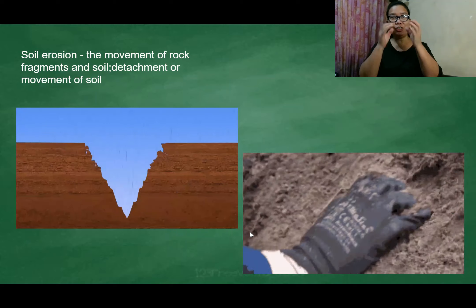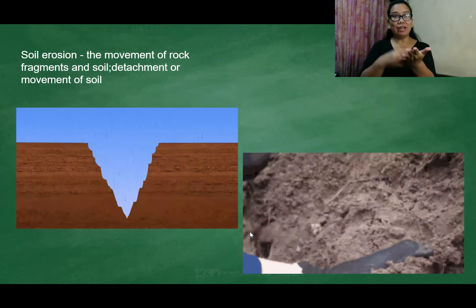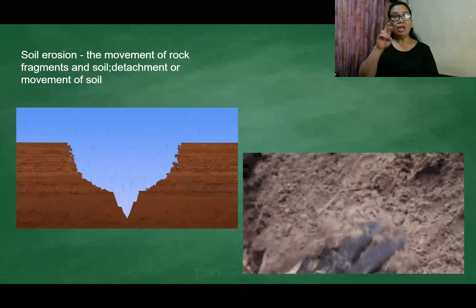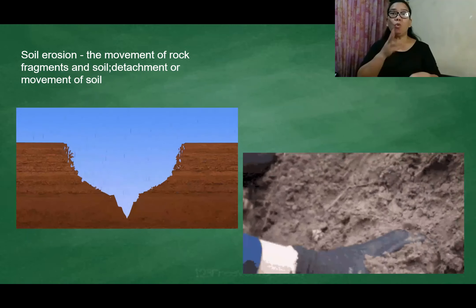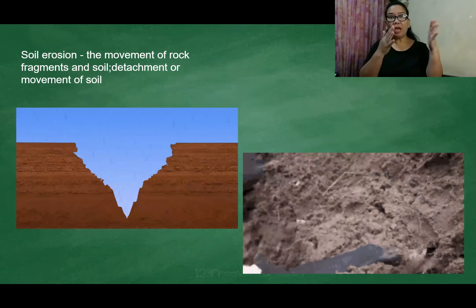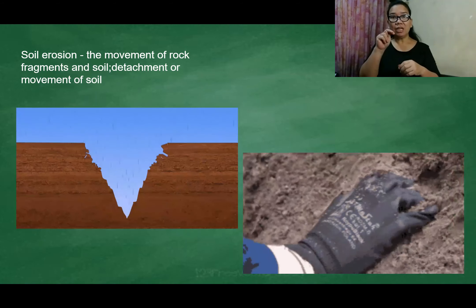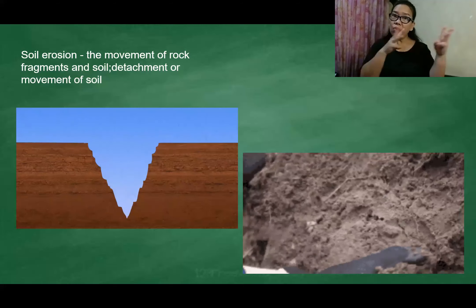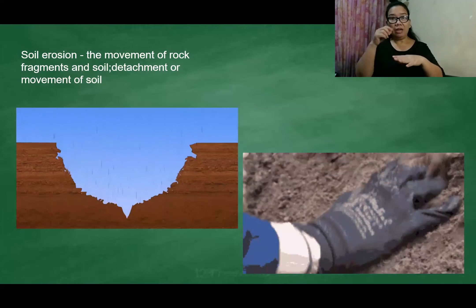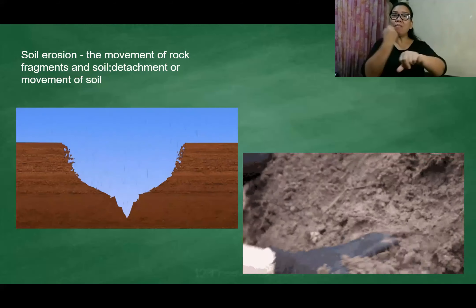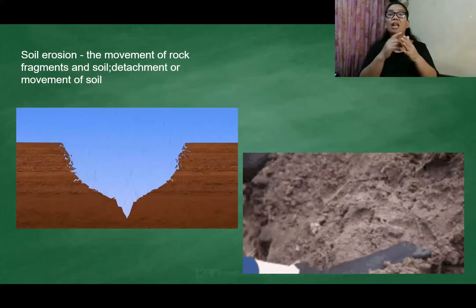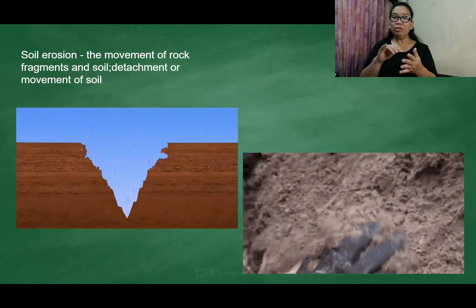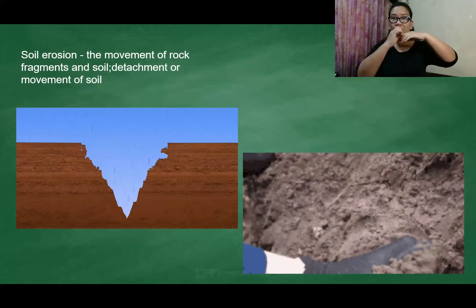Hello once again, this is Teacher Ne and now we will discuss and learn about erosion. Erosion is caused by water, wind, and other reasons. It is how the ground, the rock, and the soil change because of water, wind, and any other cause — it makes the rock break down, just like what you are seeing in our images. That is soil erosion.